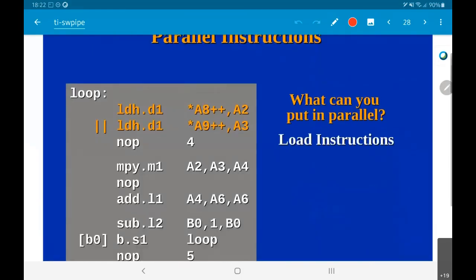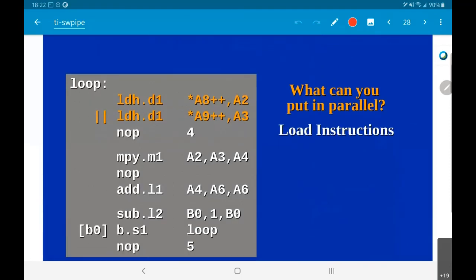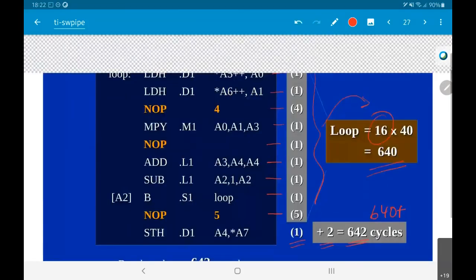The first thing that we can think about is dependency analysis. What are the things that we can do in parallel? One way of doing it would be to look at the load operations that I had over here. This load ldh.d1 star a5 plus plus and star a6 plus plus.